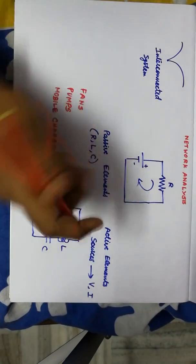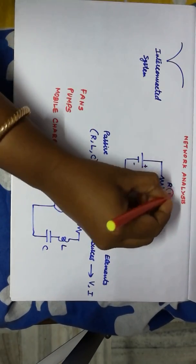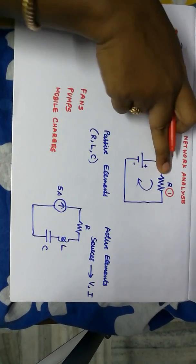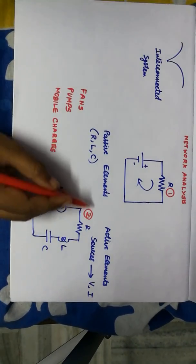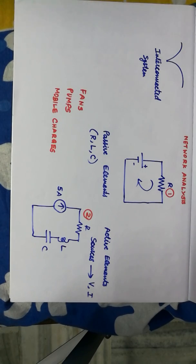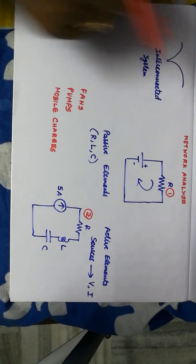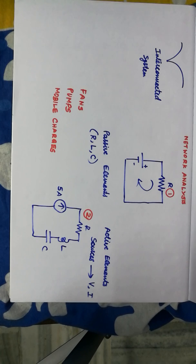So, we would consider models like whatever is given here. This is one such model. This is another model. In this model, we have L and C as well. And here we have a simple resistor. Like that, we have N number of networks which we are going to analyze.